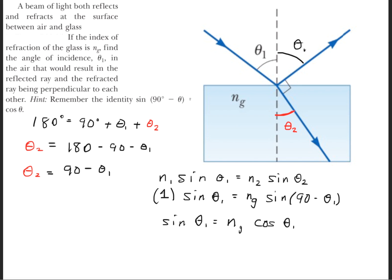Now if we simplify this, recall that it even tells you in this hint right here that the sine of 90 minus theta is simply cosine of that angle. So we get that sine of theta 1 is equal to NG times cosine theta 1. Now if we divide cosine to the other side, we get that NG is equal to the tangent of the angle. So to find theta 1, we simply take the arc tangent of the index of refraction of glass.